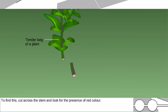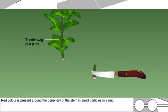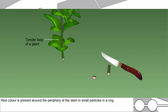Red color is present around the periphery of the stem in small particles in a ring.